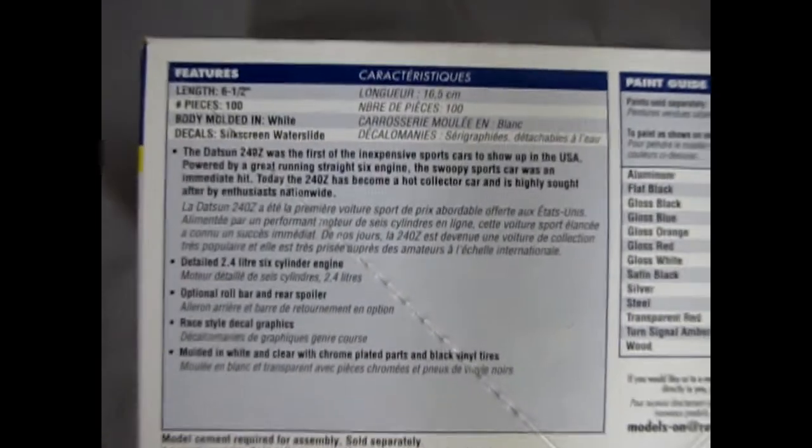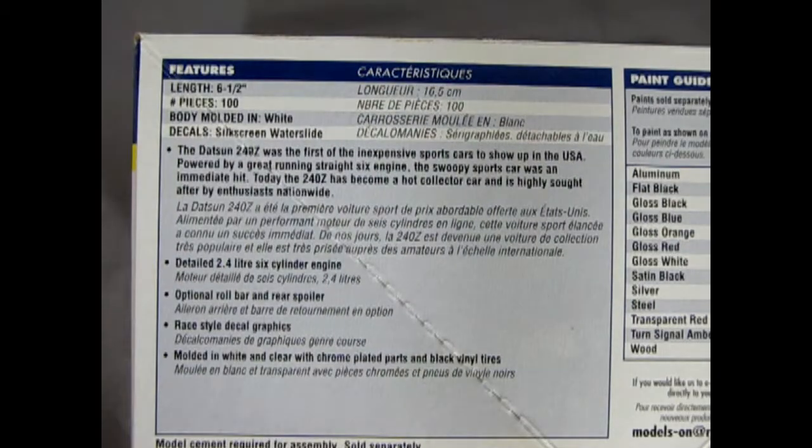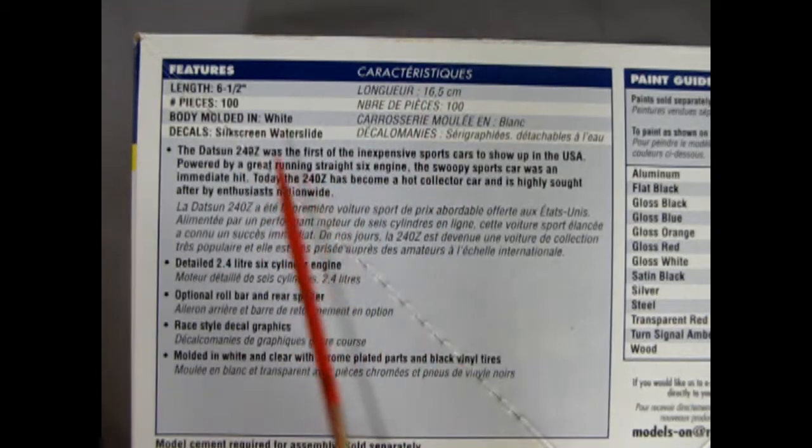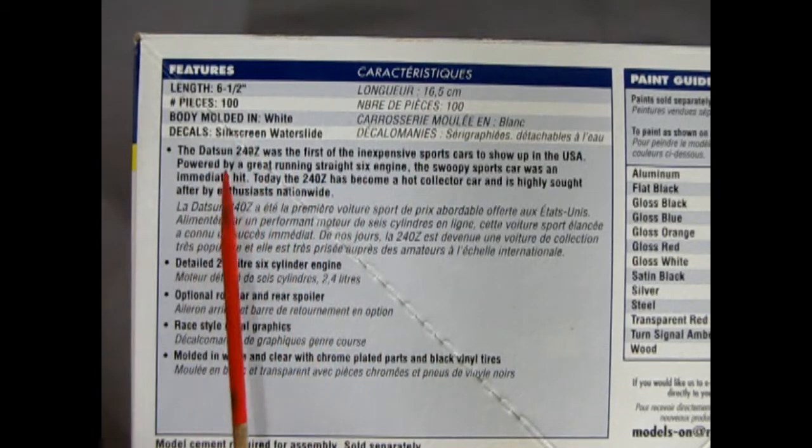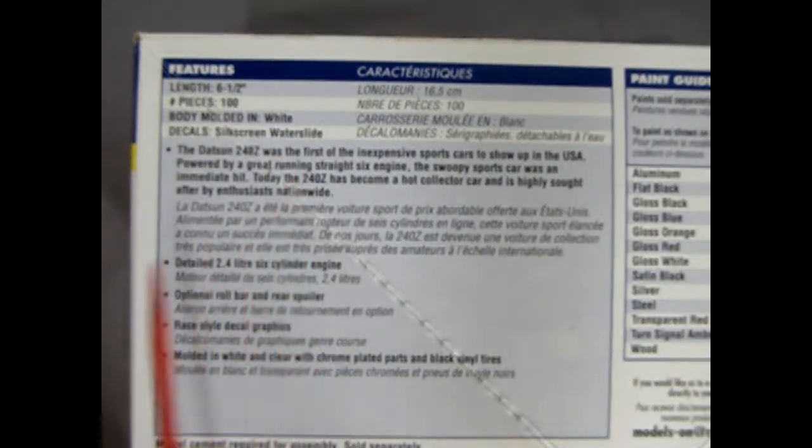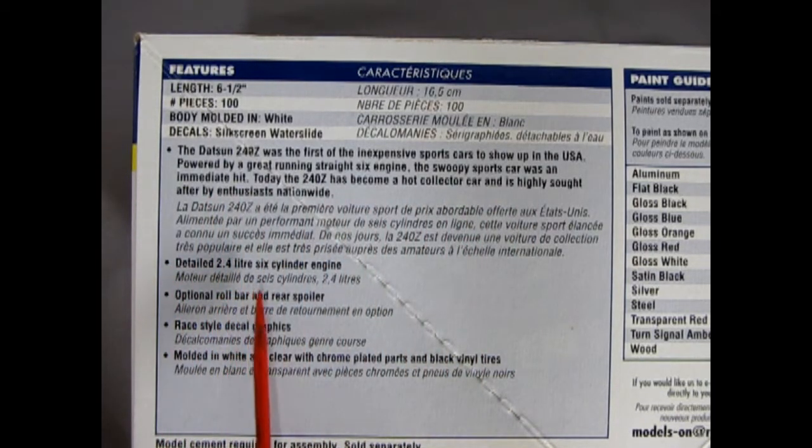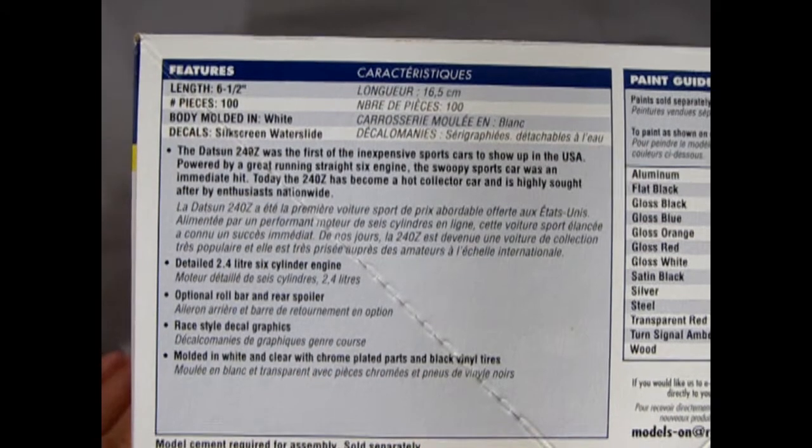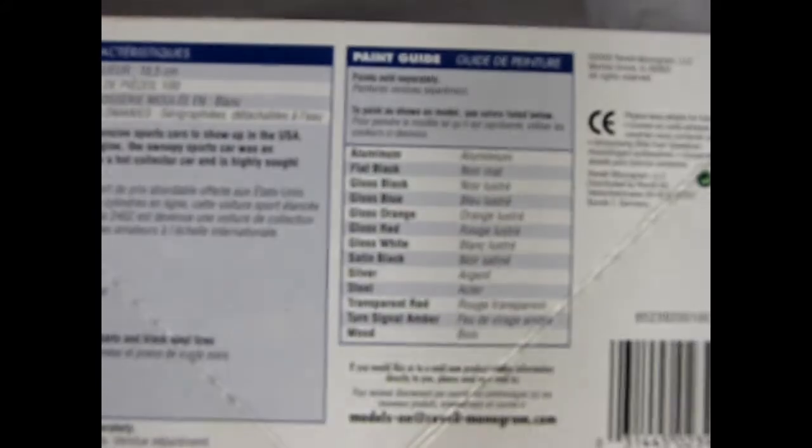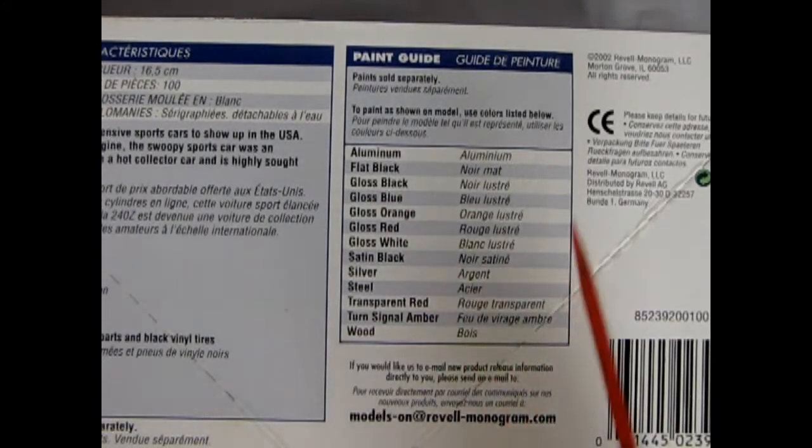We have the features of the model kit: six and a half inches long, a hundred pieces molded in white with silkscreen waterslide decals. Detailed 2.4 liter six cylinder engine, optional roll bar and rear spoiler, race style decal graphics, molded in white and clear with chrome plated parts and black vinyl tires. The box also gives you all the different colors you can paint this thing in.